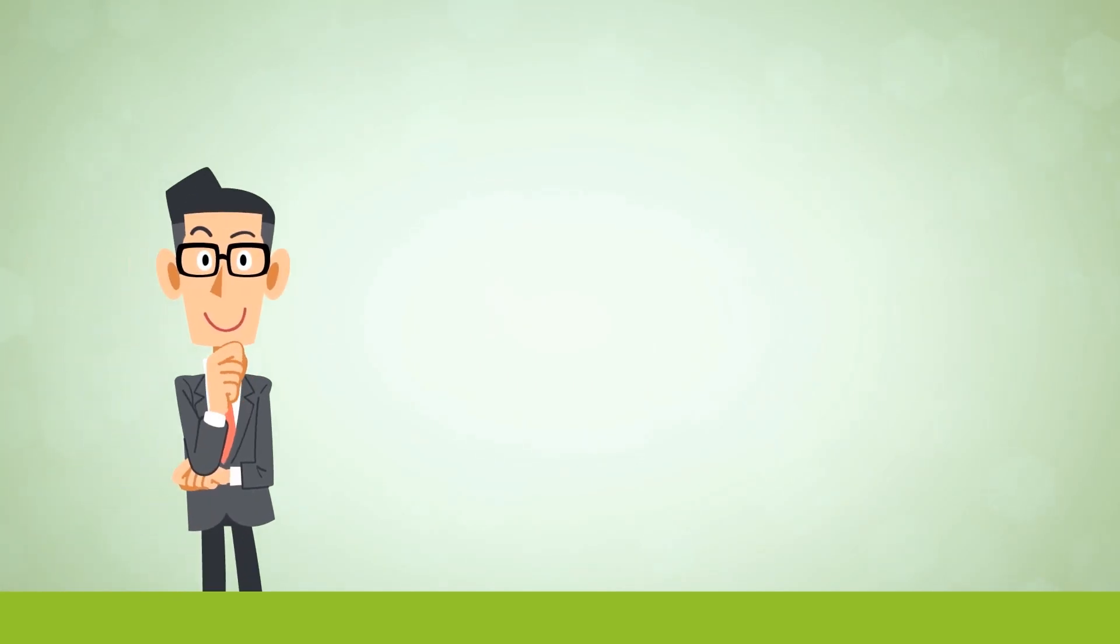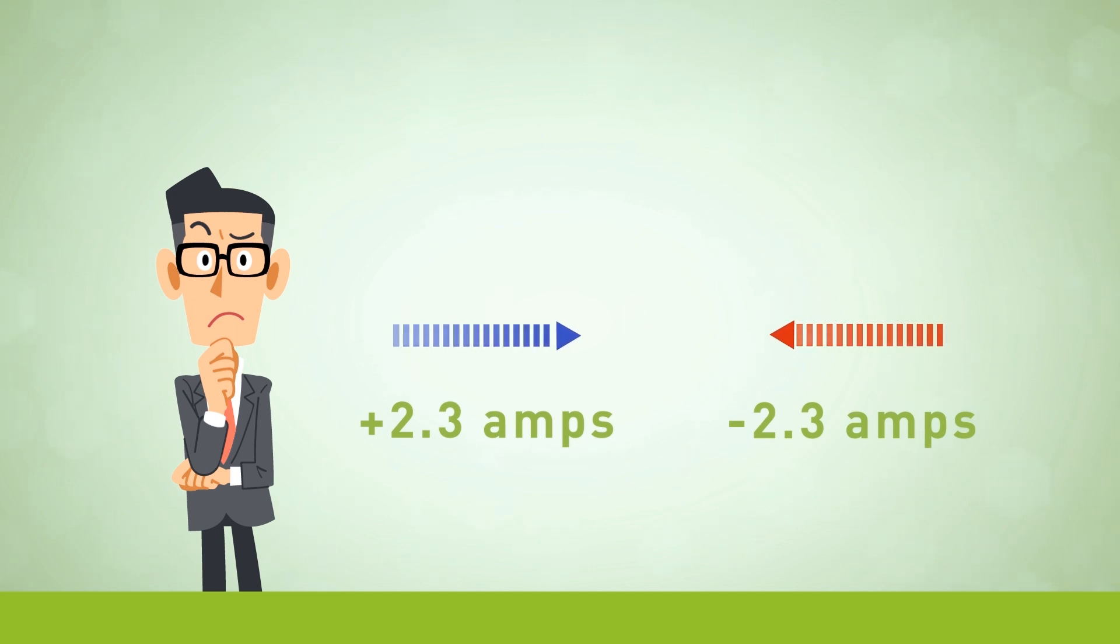A lot of people see the pluses and minuses like plus 2.3 amps and minus 2.3 amps and they get confused and think that one offsets the other. It doesn't. The positive and negative numbers are used to show the movement of the current. Current is caused by the movement of the electrons and it doesn't matter which direction the electrons are moving.